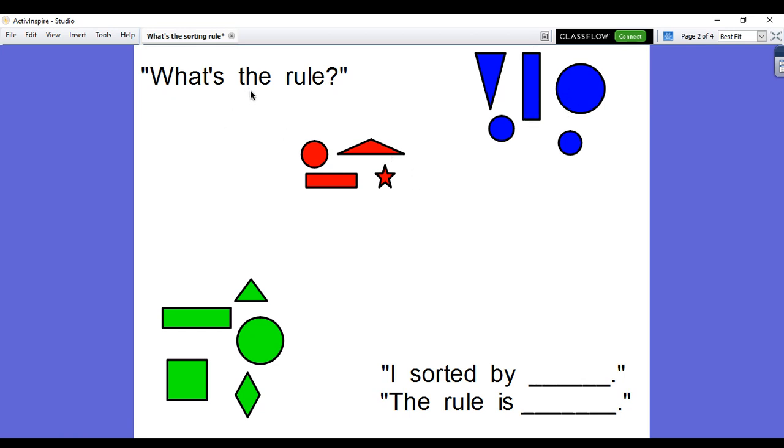So my question was, what's the rule? I can answer that by saying I sorted by color. You might also say the rule is color. So these shapes are all the same color in the group.